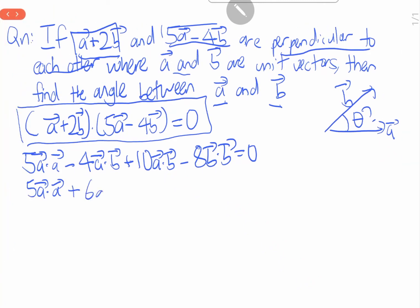So let's further simplify this. 5a·a plus 6a·b minus 8b·b equals to zero. We know that A and B are unit vectors, which means that a equals to b equals to one unit.